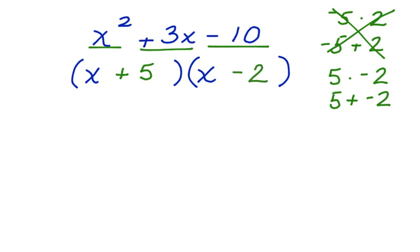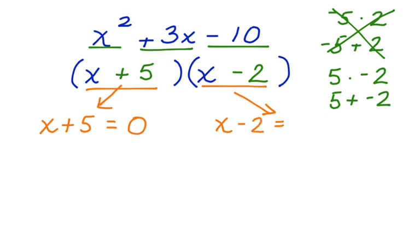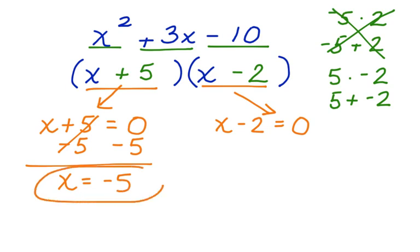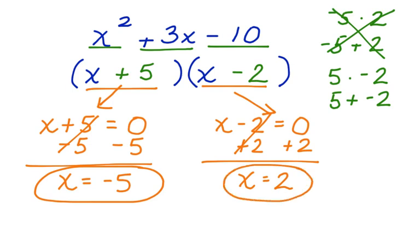Now we're going to break these two binomials into two separate equations so that we can solve for the x-intercept. We have x plus 5 equals 0, and we have x minus 2 equals 0. Solve for x. We subtract 5 from both sides on this equation. These cancel. x equals negative 5. There's our first x-intercept. Now we're going to add 2 to both sides of this equation. These cancel. x is equal to positive 2. So our two x-intercepts are negative 5 and positive 2, and our work is complete.